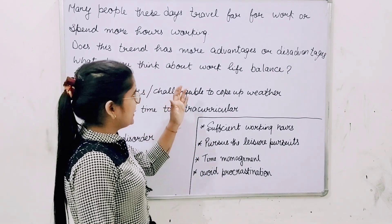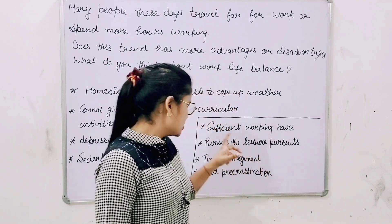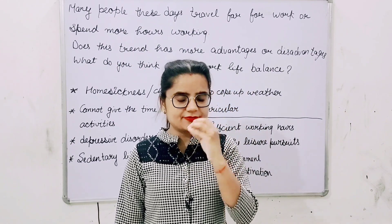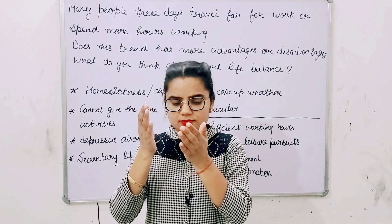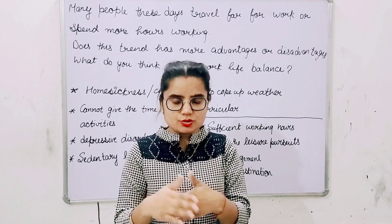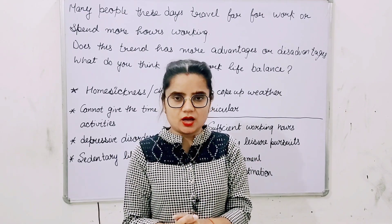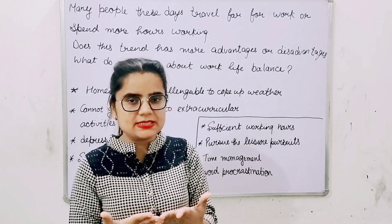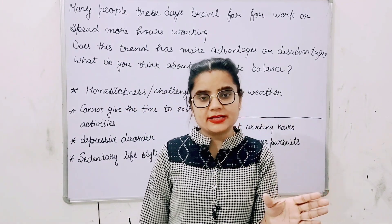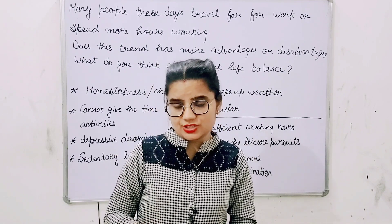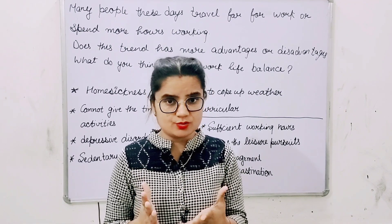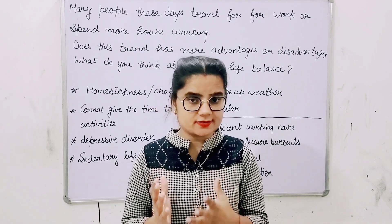Now let's look at some advice on how working life can be balanced. First, sufficient working hours should be maintained — people should not make money their only motivation. They should focus on their health, give sufficient hours to work, and then give time to their families and personal life as well. Second, leisure pursuits should be pursued so they can get deep relaxation and mental satisfaction, which is important given the hectic schedule seen academically, personally, and professionally.